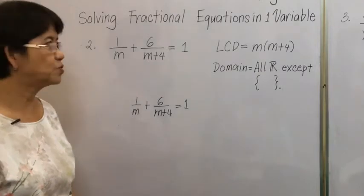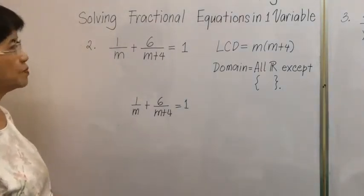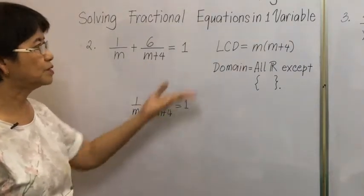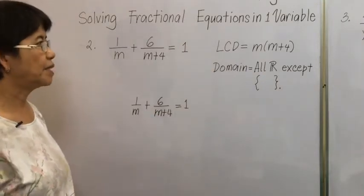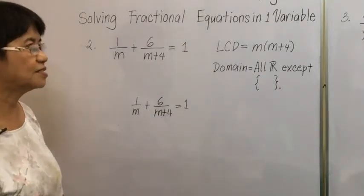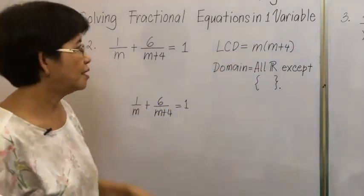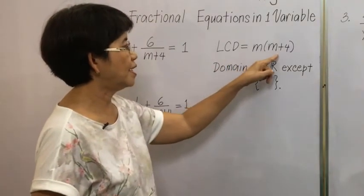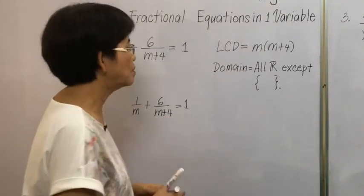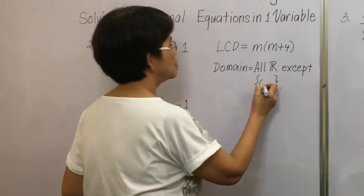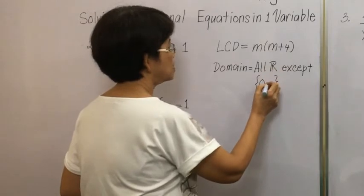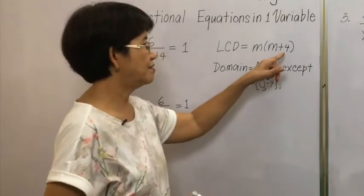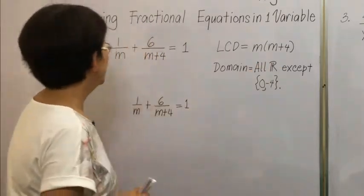For example number 2, we determine the LCD of the equation. We have m and m plus 4, so the LCD is m times m plus 4. For the domain, we equate each factor to zero: m equals 0, and m plus 4 equals 0 gives m equals negative 4. So the exceptions are 0 and negative 4.